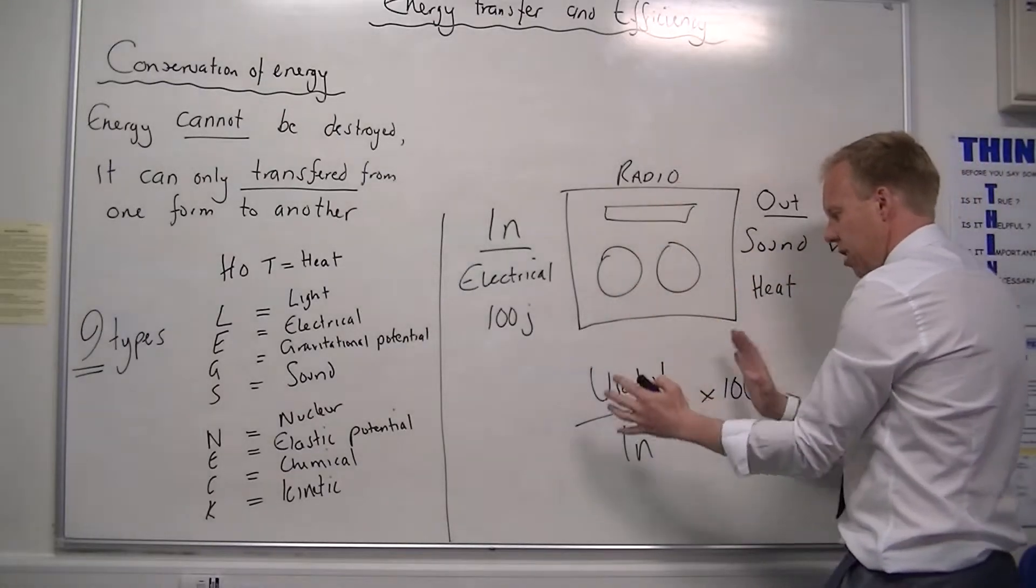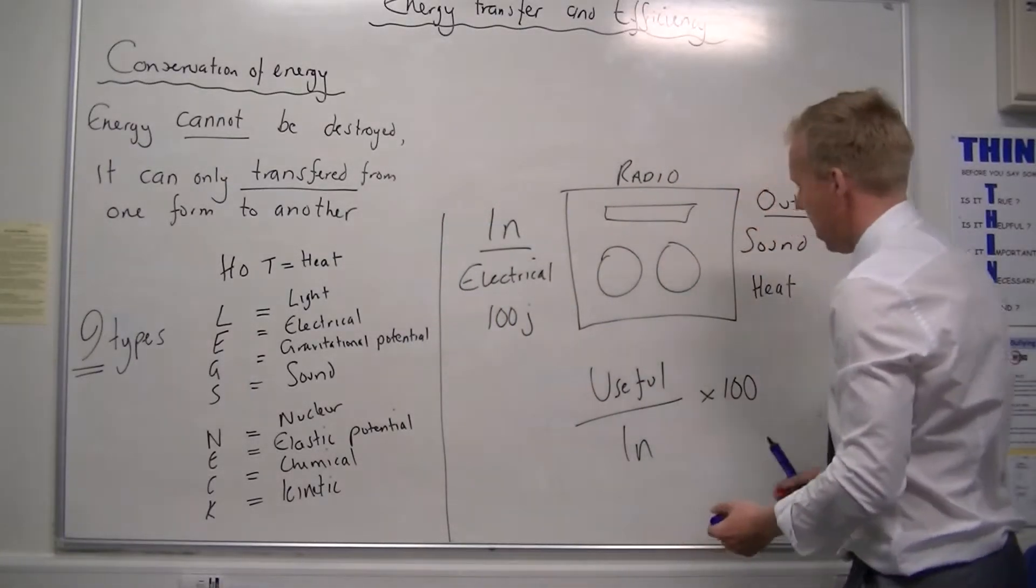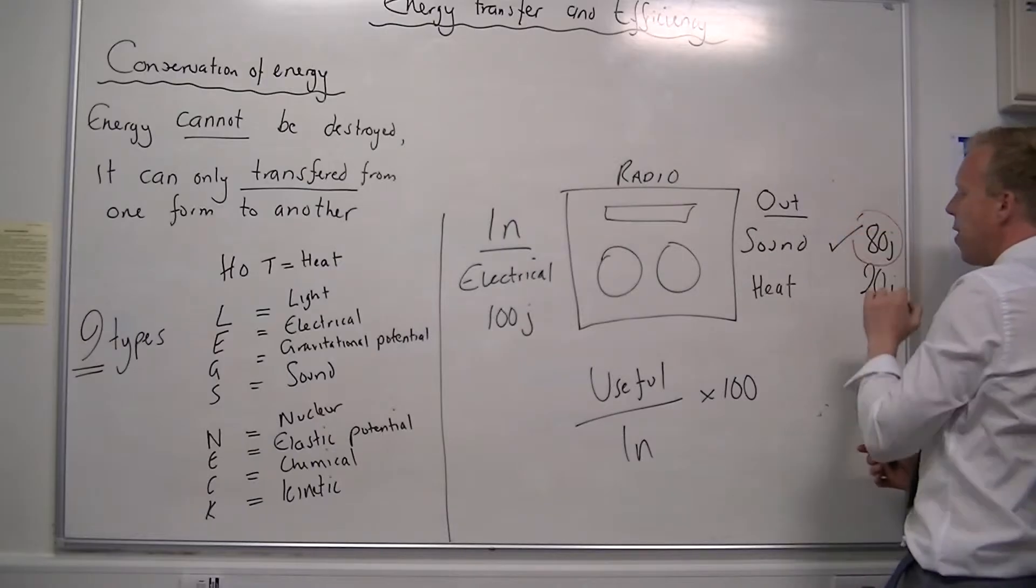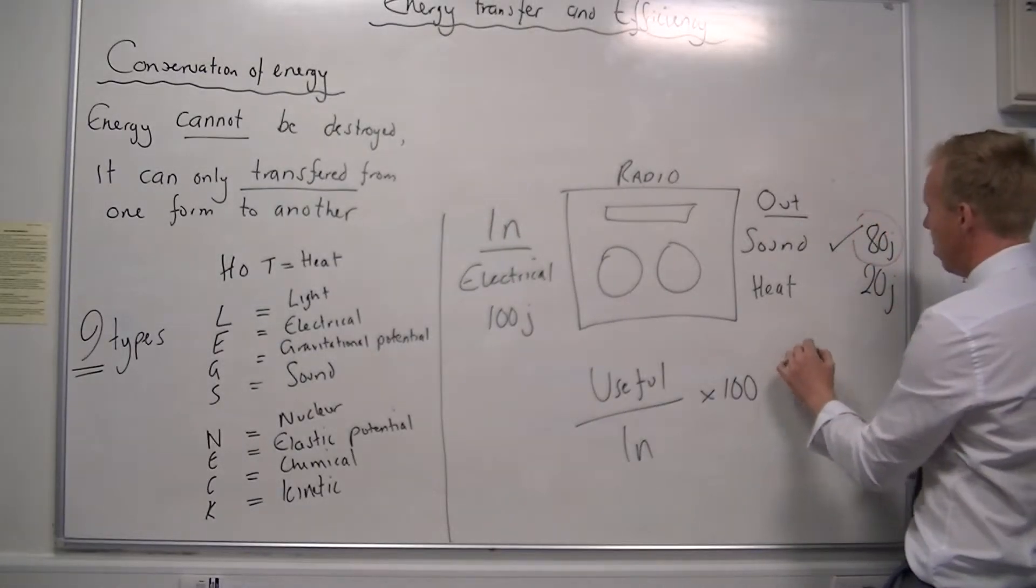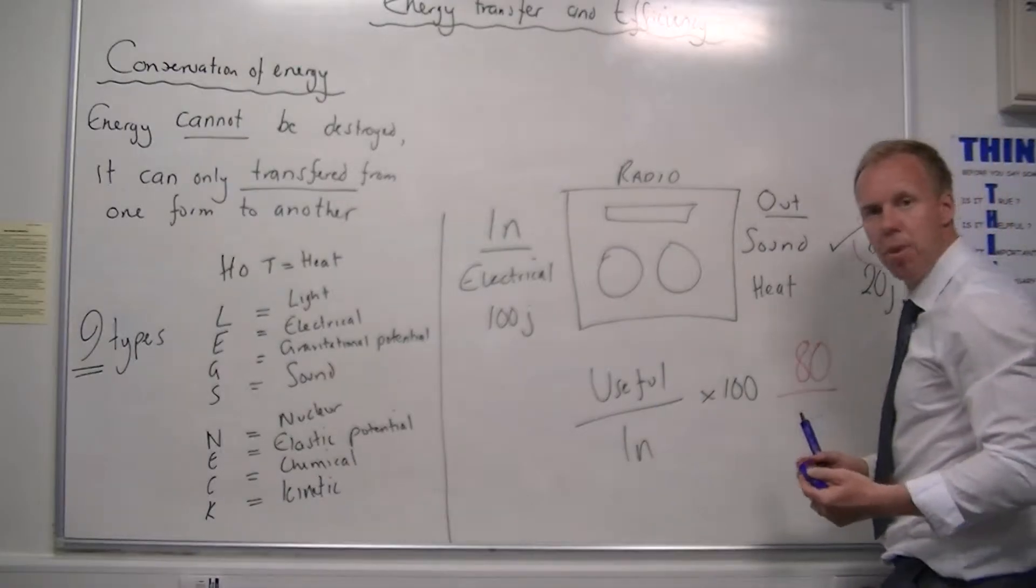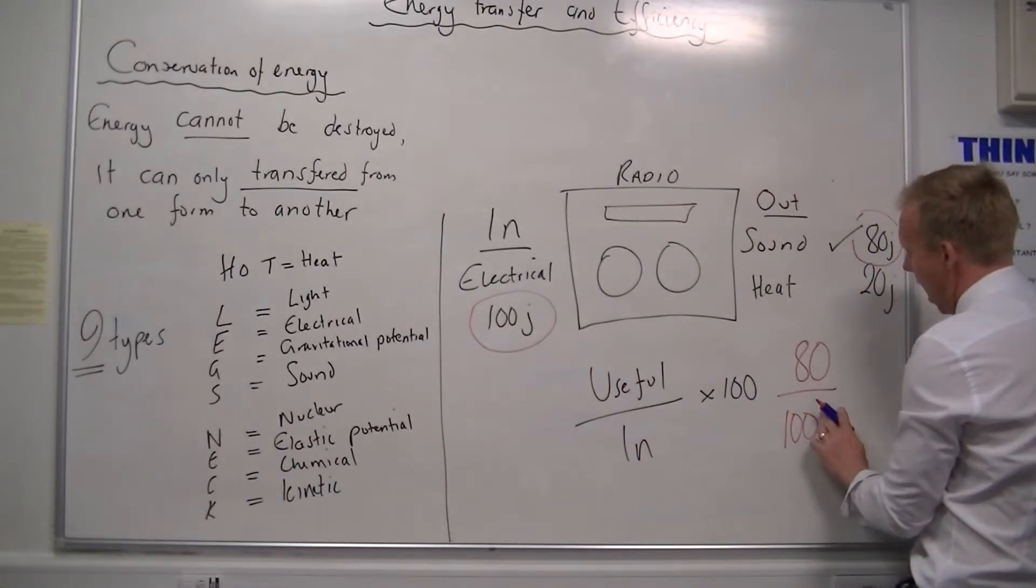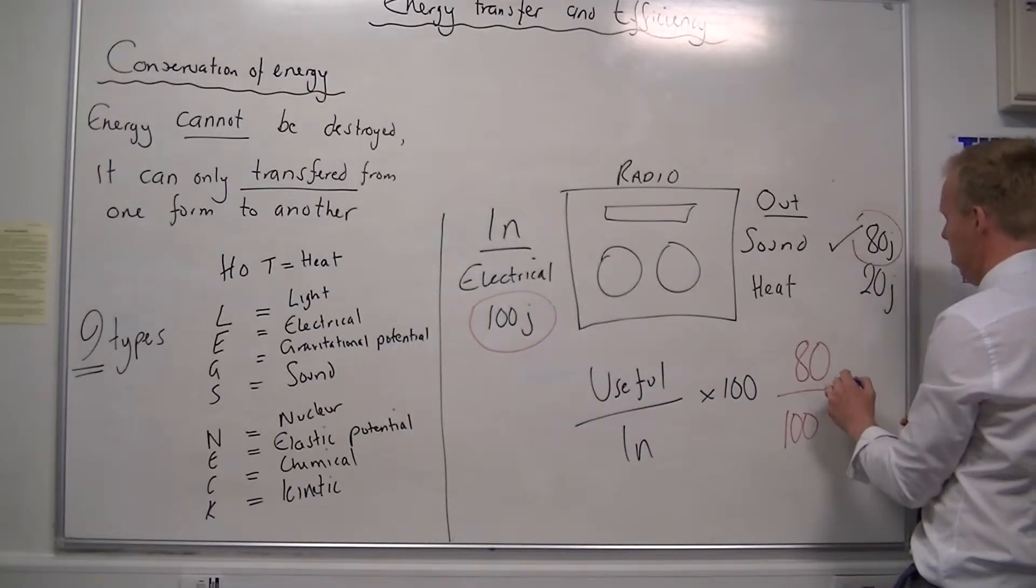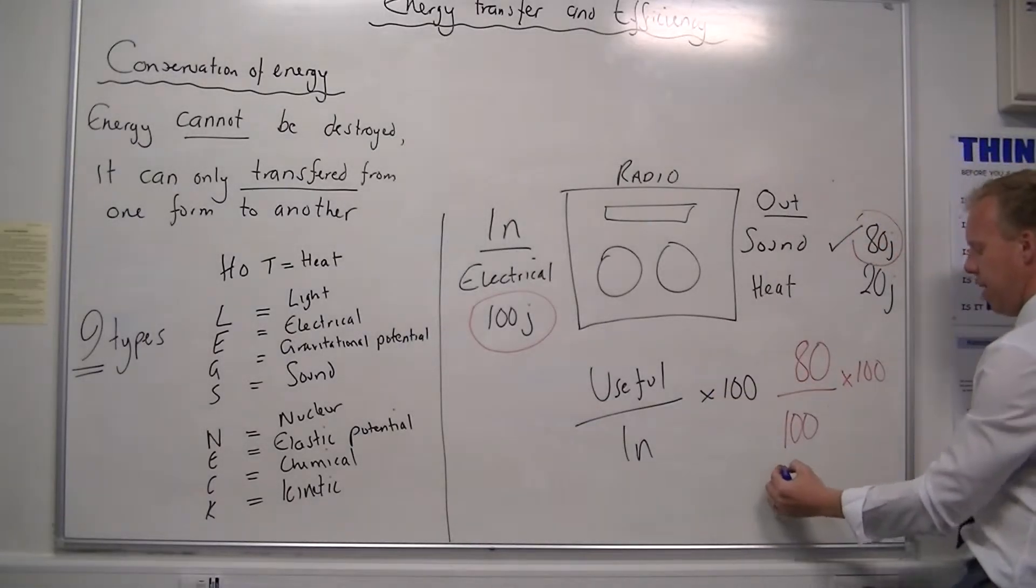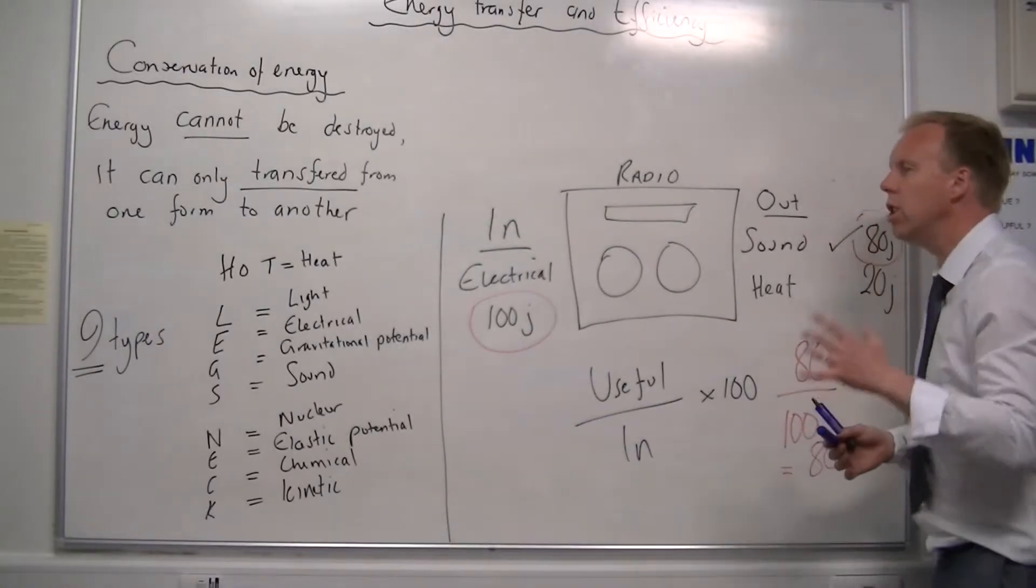I need to transfer these numbers into my equation. So I'm going to try and show with a pen what goes where. The useful energy is the thing that we want from the machine, so I'm going to put 80 there. I divide that by the energy I put in, I hope you see where I've got that from. I've timed it by 100 to create a percentage. And my apologies, and that gives me an efficiency, I'm running out of hard space here, but that will give you 80%.